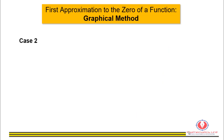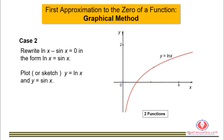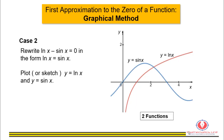The second case is when the equation involves more than one type of function. For example, ln(x) minus sin x equals zero. We rewrite the function as ln(x) equals sin x, then sketch the graphs y equals ln(x) and y equals sin x. The approximate value of the root is x-naught equals 2.2.